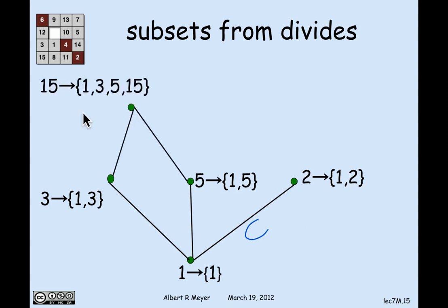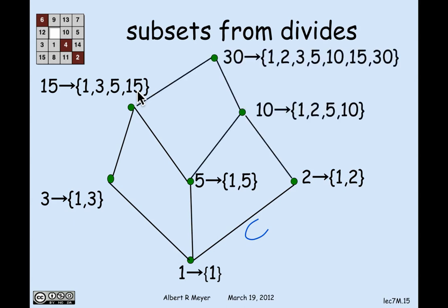And at the next level, I'm going to map 15 to all of the numbers that properly divide 15 along with 15. So 1, 3, 5, and 15 are what the number 15 maps to. That's a set. And likewise, 10 maps to 1, 2, 5, 15, and 30 maps to all of the numbers that are below it, including itself.